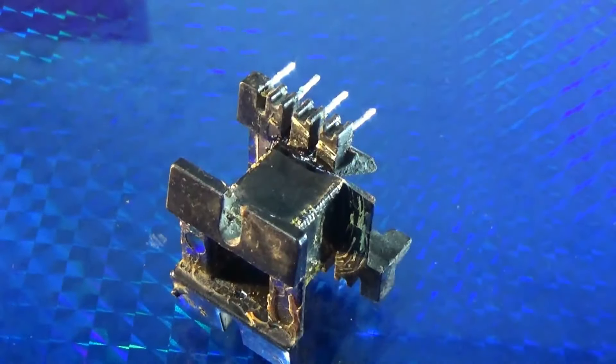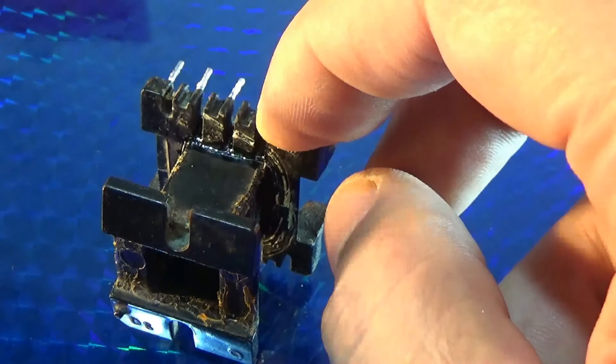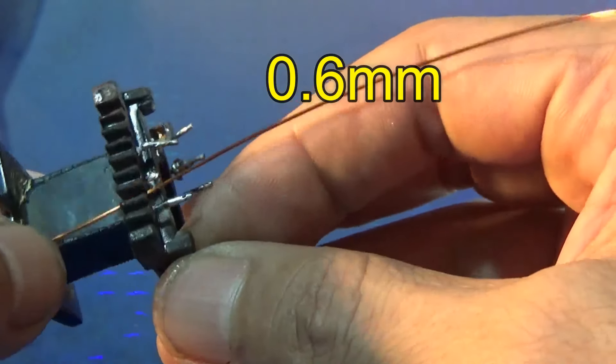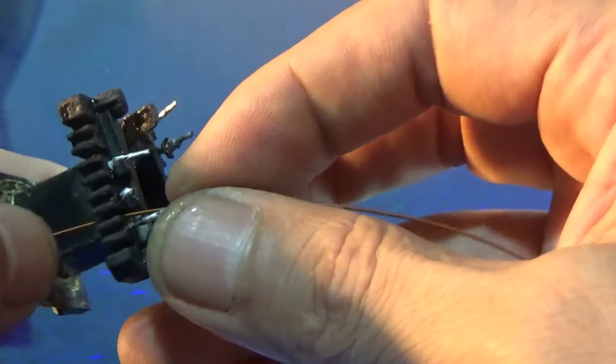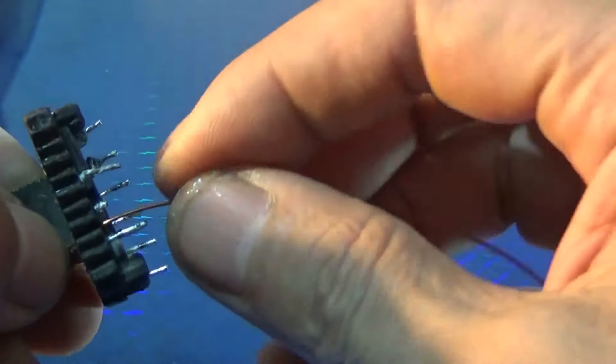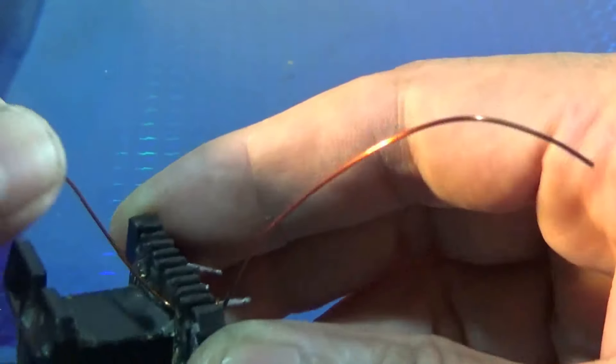Here we can do it carefully. We need to be very careful because the iron core is a little small. Now we're going to do it.